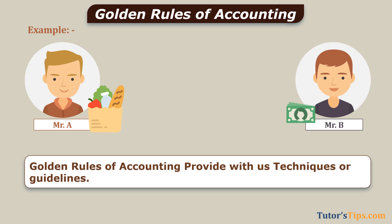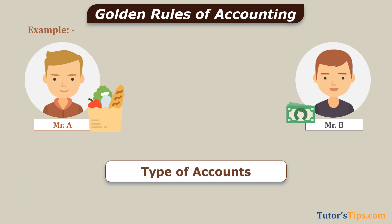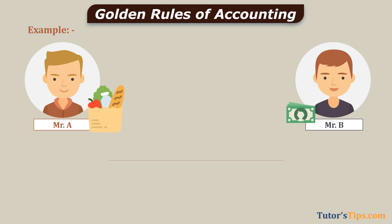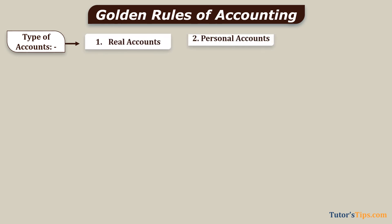To understand the technique of Golden Rules of Accounts, first we have to know the types of accounts, because rules are applied to transactions on the basis of the type of account involved. According to the Golden Rules of Accounting, accounts are divided into three categories: Real Account, Personal Account, and Nominal Account.